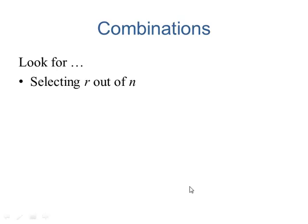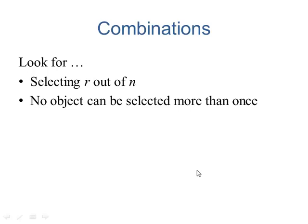For combinations, we want to look for, again, selecting r out of n, this many out of that many. We want to make sure there's no repetition.